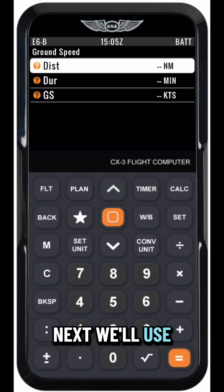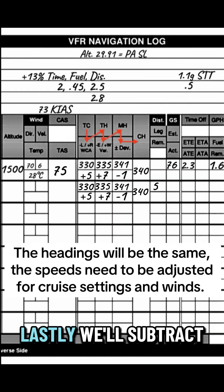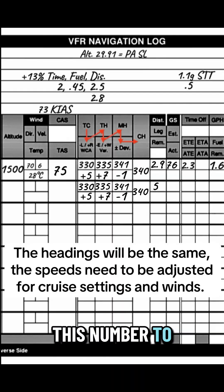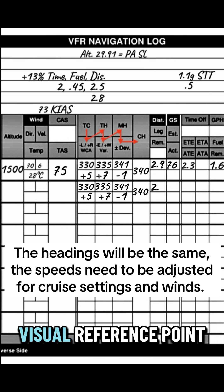Next, we'll use ground speed to adjust our distance. Lastly, we'll subtract this number to get the remainder for our distance to the first visual reference point.